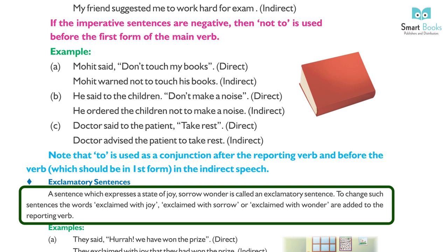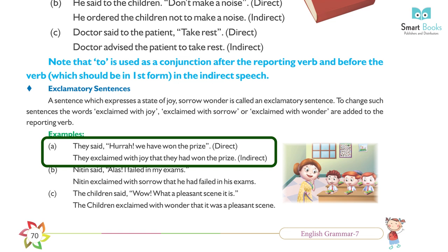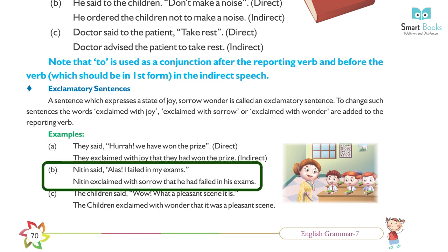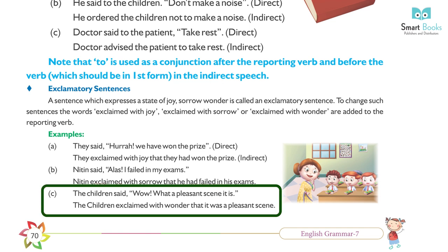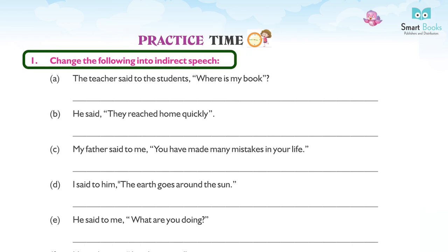Exclamatory sentences — a sentence which expresses joy, sorrow, or wonder is called an exclamatory sentence. To change such sentences, 'exclaimed with joy', 'exclaimed with sorrow', or 'exclaimed with wonder' are added to the reporting verb. Examples: (a) They said, 'Hooray! We have won the prize.' → They exclaimed with joy that they had won the prize. (b) Nitin said, 'Alas! I failed in exams.' → Nitin exclaimed with sorrow that he had failed in his exams. (c) The children said, 'Wow! What a pleasant scene it is.' → The children exclaimed with wonder that it was a pleasant scene.